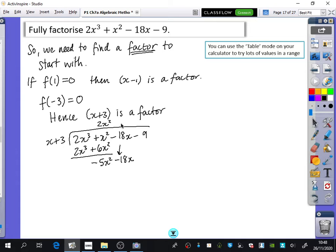You're going to do this divided, which will give you minus 5x. Multiply by minus 5x, and you get minus 5x squared minus 15x. What does that subtract to?